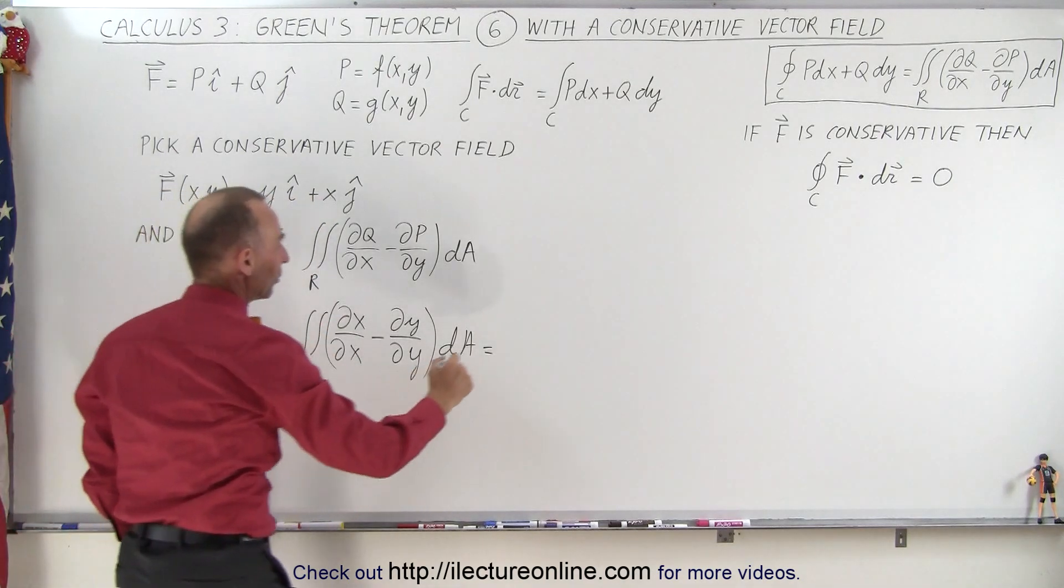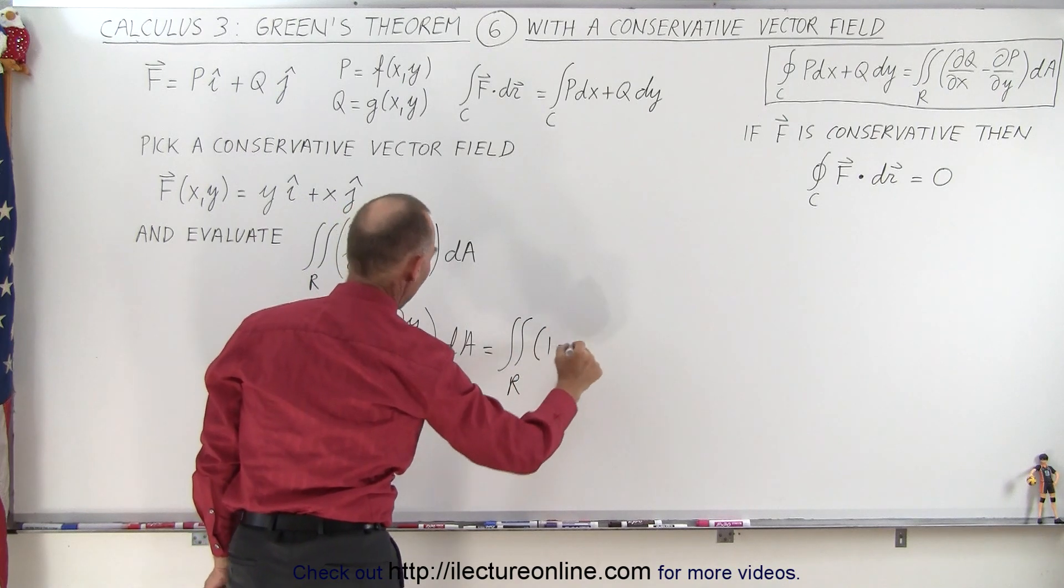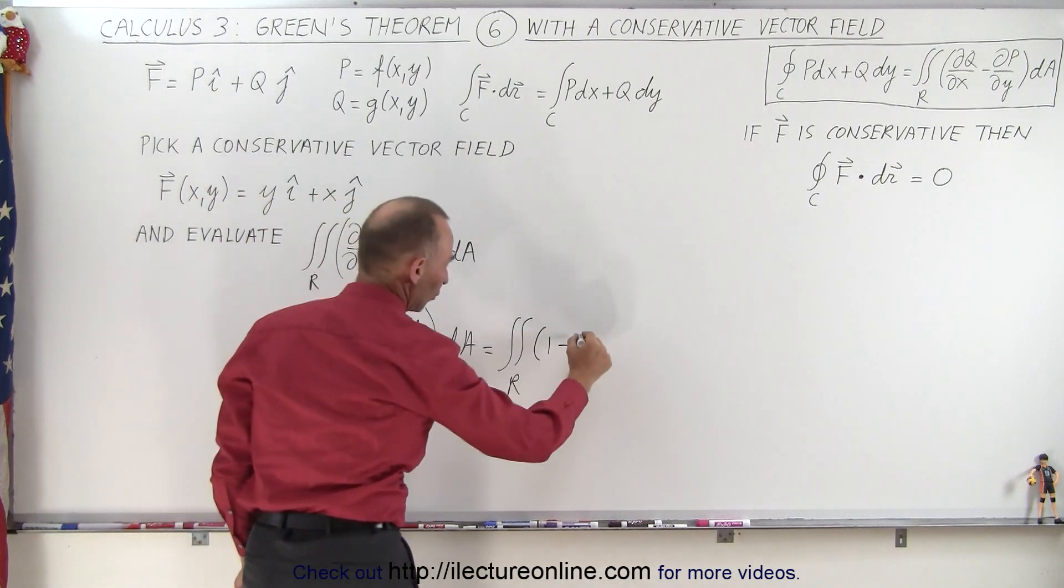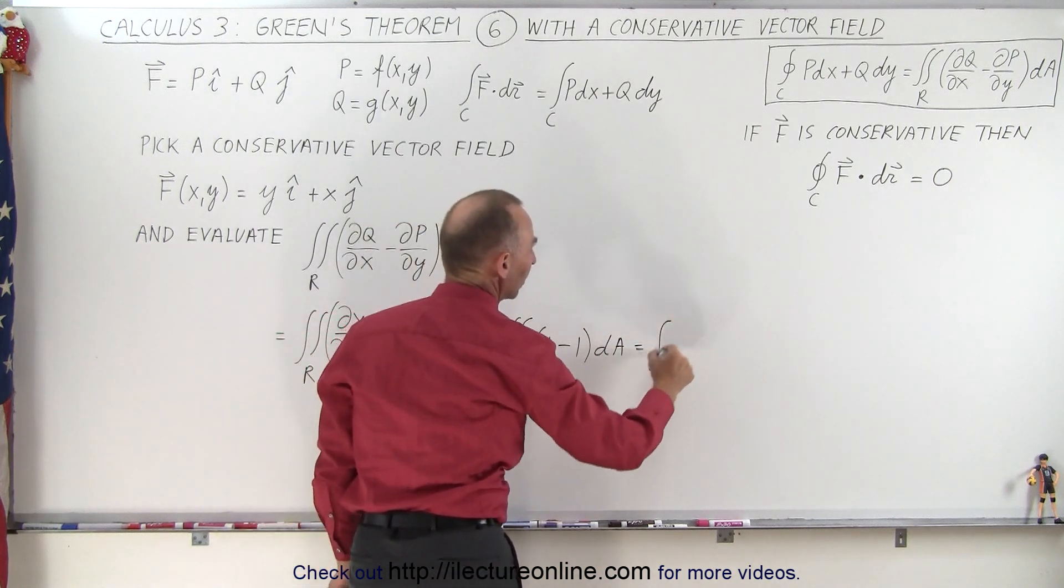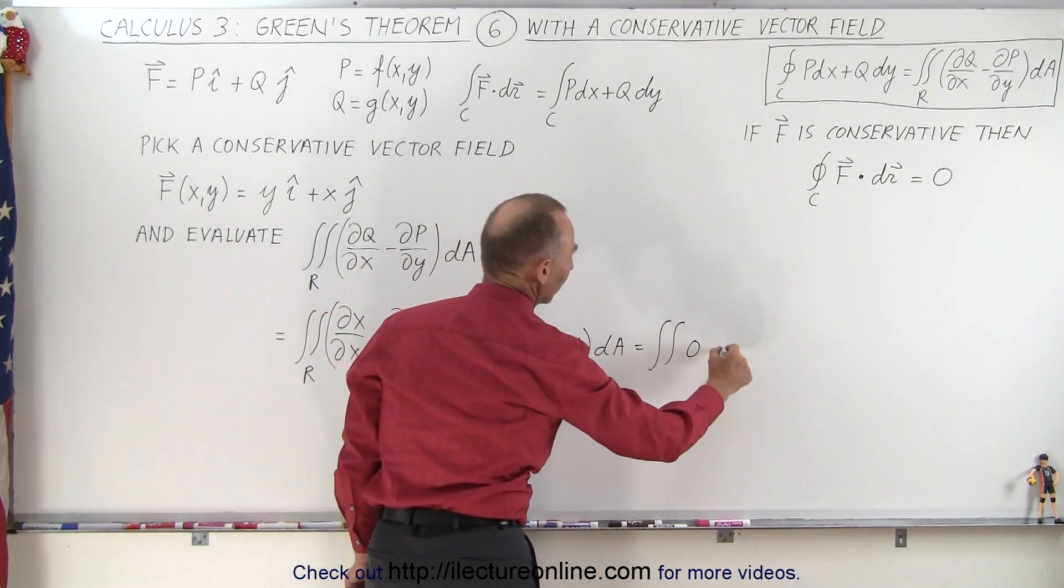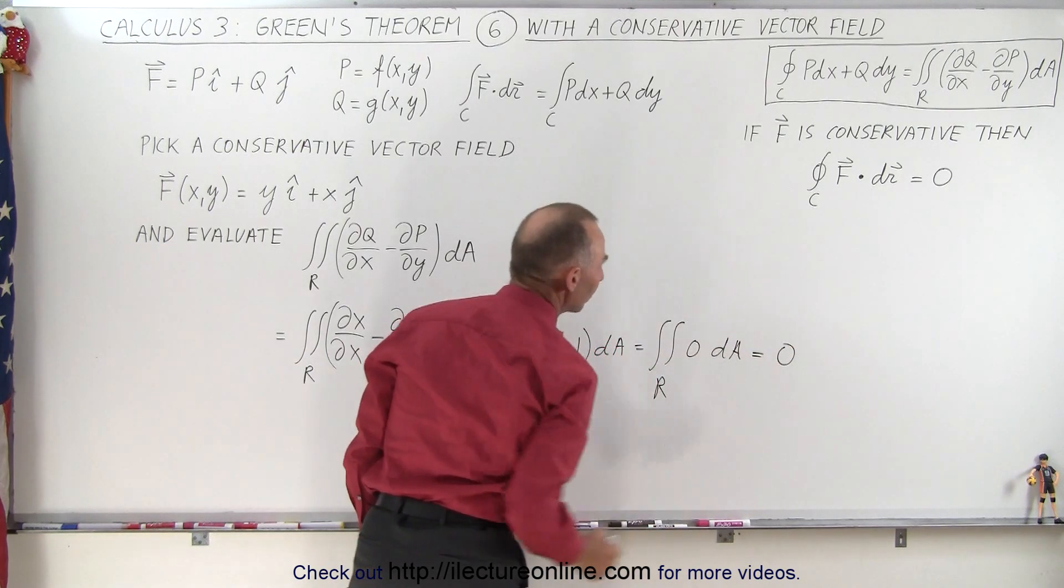So this here would be equal to 1, so the double integral over the region of 1 minus, and this is of course also equal to 1, times dA, which equals the double integral of 0 dA over the region, and of course that is equal to 0.